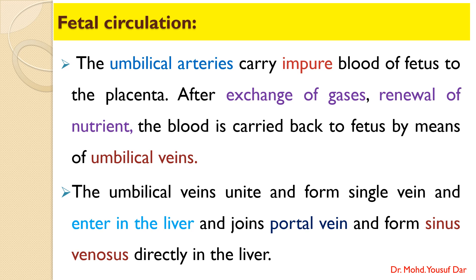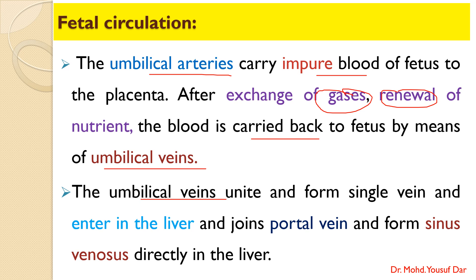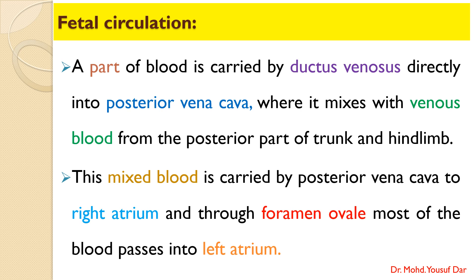Now coming to the main topic — fetal circulation: the umbilical arteries carry the impure blood of the fetus to the placenta. After the exchange of gases and renewal of nutrients, the blood is carried back to the fetus by the umbilical veins. The umbilical veins pass through the umbilical cord, reach the umbilicus, unite to form a single umbilical vein, run on the floor of the abdomen, and enter the liver through the umbilical fissure, where it joins the portal vein to form the sinus venosus. A part of the blood is directly carried from the umbilical vein by the ductus venosus into the posterior vena cava.